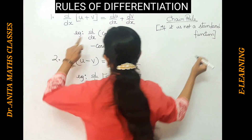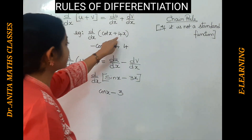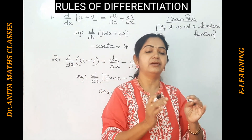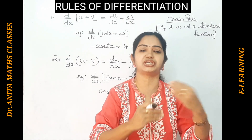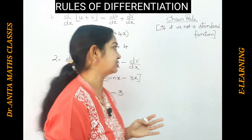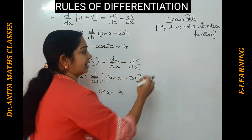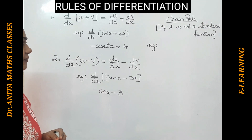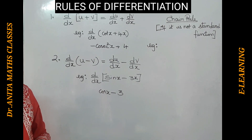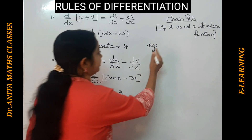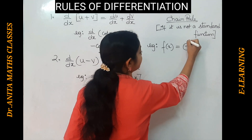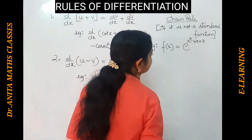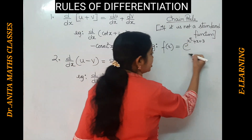If it is already a standard function, we can directly get the derivative. But if the function is not in the form of a standard function, we keep doing the derivative multiple times in a chain process until we get the normal function. Just telling you isn't enough — let me give you an example.